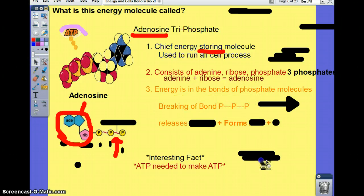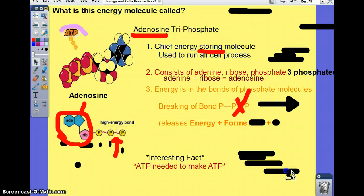When we break the bond of phosphate, so I'll take this bond right here and I'll break it. Basically what's released is energy. As you see here, there's energy in that bond. And then what's left over is ADP.